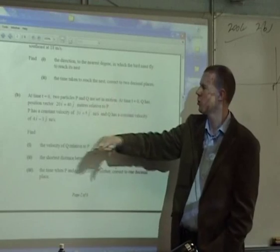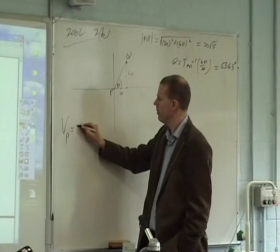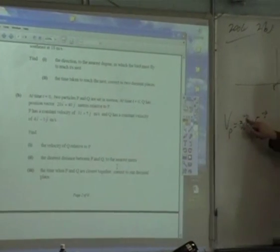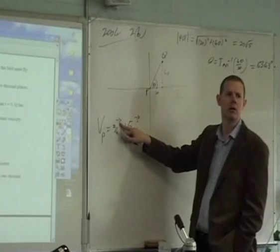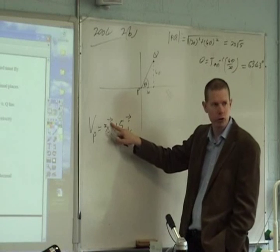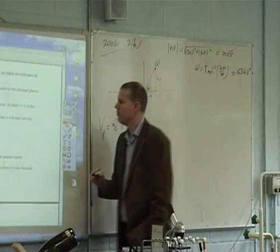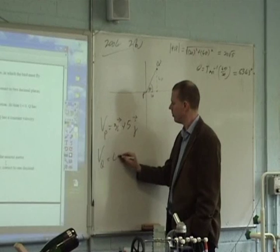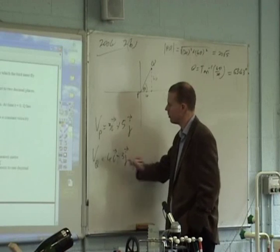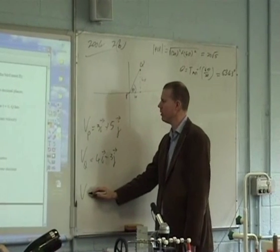P has a constant velocity of 3i plus 5j - write it down straight away. VP equals 3i plus 5j. Why am I putting that arrow on top? To show that it's a vector. Q has a constant velocity 4i minus 3j. Velocity of Q equals 4i minus 3j.